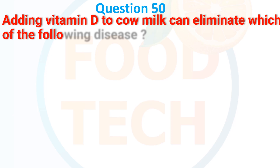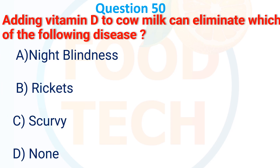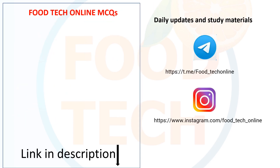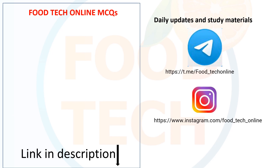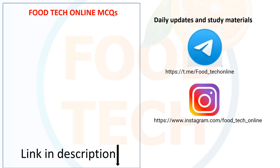A naturally occurring stabilizer used in ice cream is: A. Guar gum, B. Gelatin, C. Glycithin, D. None. The answer is A. Guar gum. Adding vitamin D in cow milk can eliminate which of the following disease? A. Night blindness, B. Rickets, C. Scurvy, D. None. The answer is C. Scurvy.